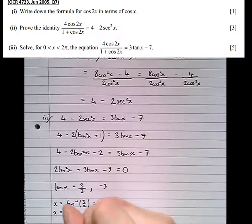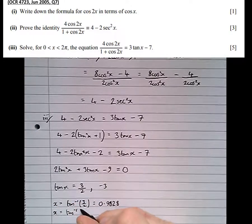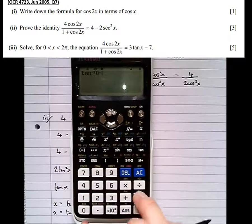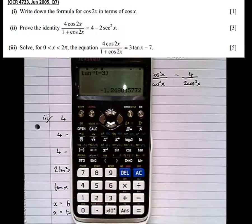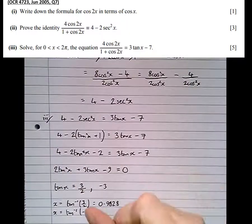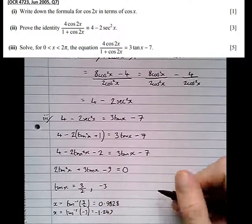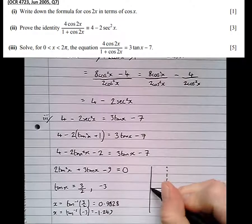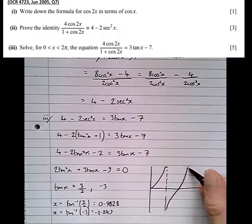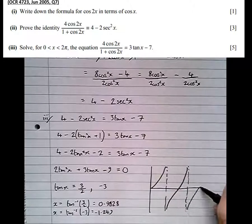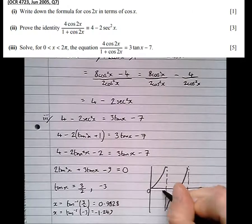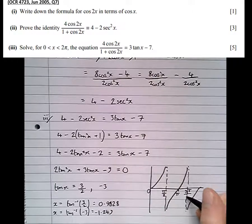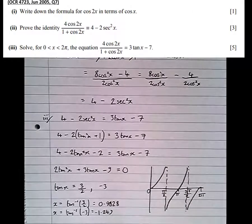And the other one, the inverse tan of minus 3. So the inverse tan of minus 3 is equal to minus 1.249. Minus 1.249. So drawing the graph in our valid region, which is 0 to 2 pi. So 0, 1 half pi, 2 halves pi, 3 halves pi, and 4 halves pi. Going up in half pi's.